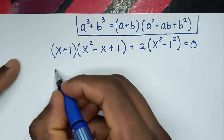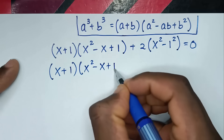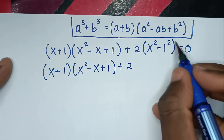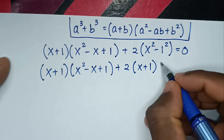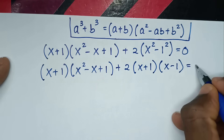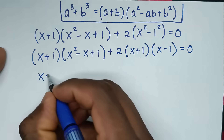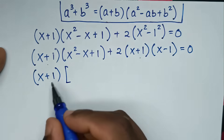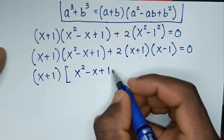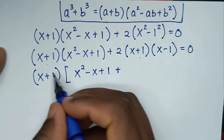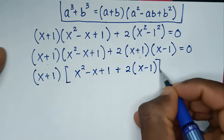Then in the next step, it will be x plus 1 bracket, x² minus x plus 1 bracket, plus 2, then difference of two squares gives x plus 1 bracket, x minus 1 bracket, is equal to 0. Into here, x plus 1 bracket, x plus 1 bracket, then this divided by x plus 1 is x² minus x plus 1, then plus 2 bracket, x minus 1 bracket, is equal to 0.